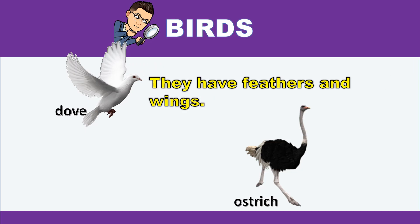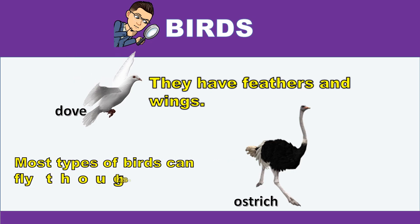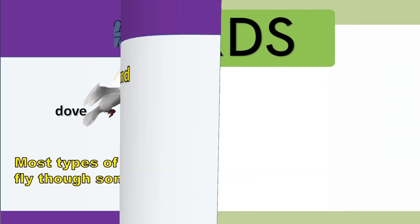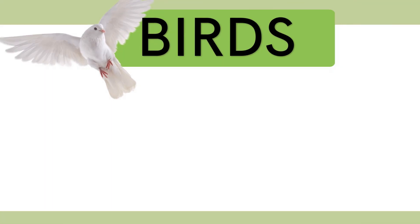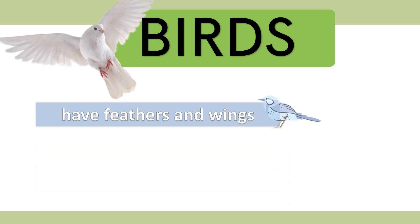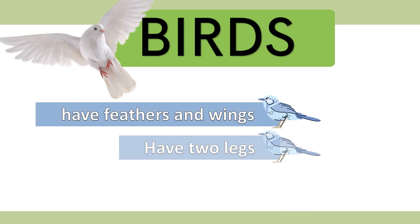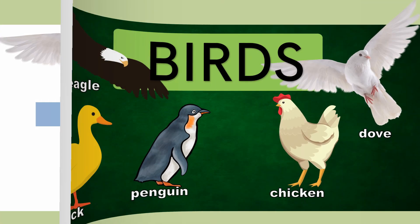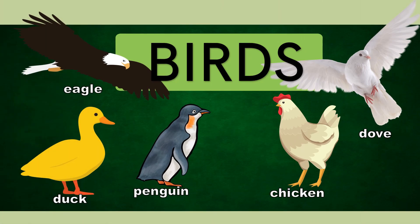In that picture, class, what do you think the dove can do that the ostrich cannot? The dove can fly while the ostrich cannot. Most types of birds can fly, though some cannot. Let us now read the characteristics of birds: birds have feathers and wings, birds have beaks, birds lay eggs. Other examples of birds are eagle, duck, penguin, chicken, and dove.